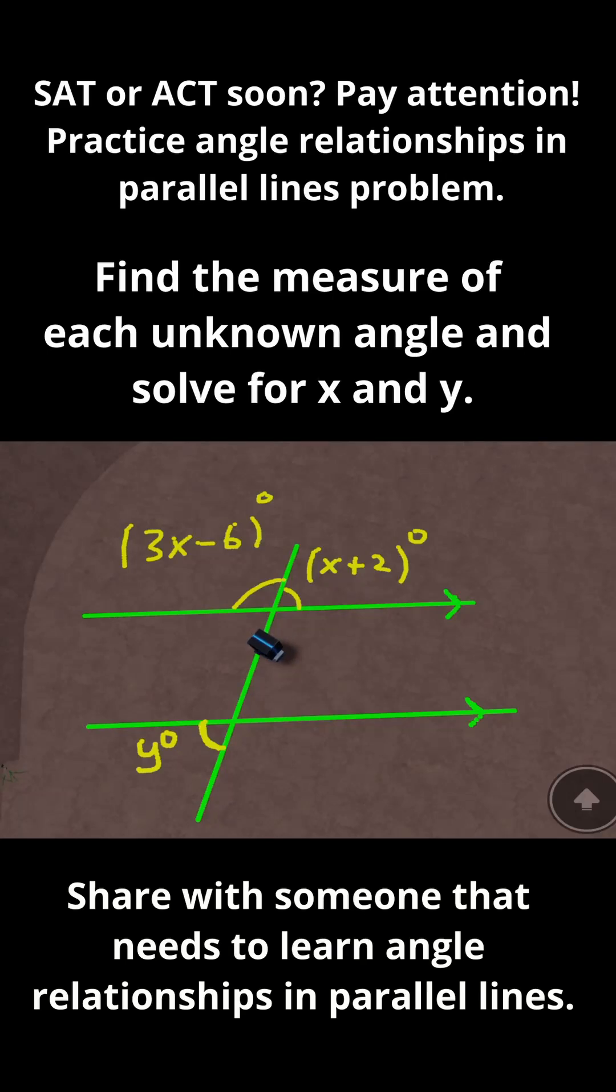In this problem, I need to solve for what x and y are equal to, and I need to find the value of each of the angles in this problem. To solve this problem, I'm first going to realize that these two angles over here are supplementary because they're along a straight line.